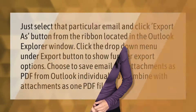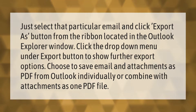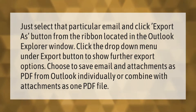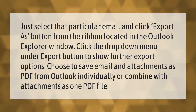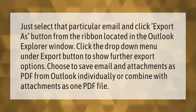Select the particular email and click the Export As button from the ribbon located in the Outlook Explorer window. Click the drop-down menu under the Export button to show further export options. Choose to save email and attachments as PDF from Outlook, either individually or combined with attachments as one PDF file.